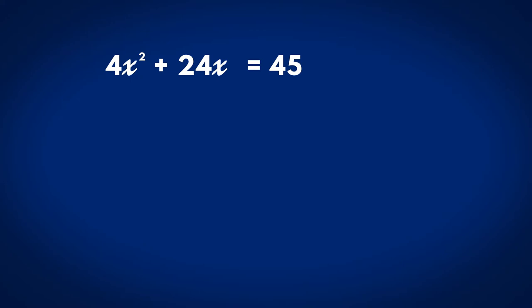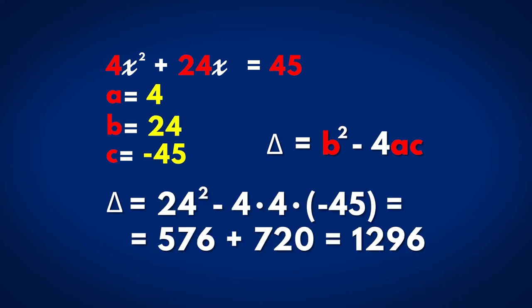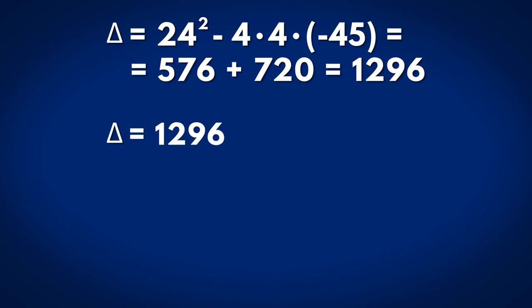The coefficients of the equation are a equals 4, b equals 24, c equals minus 45. We calculate the equation discriminant by replacing the coefficients: delta equals b squared minus 4ac in the formula. We get the discriminant of the equation is positive,